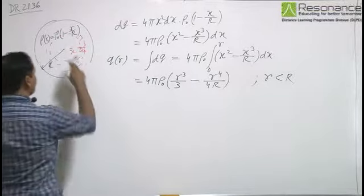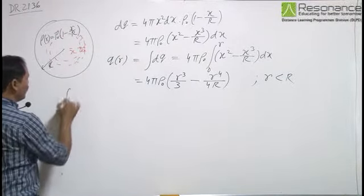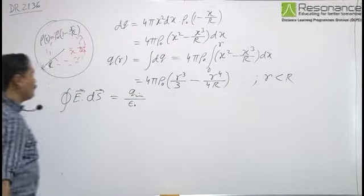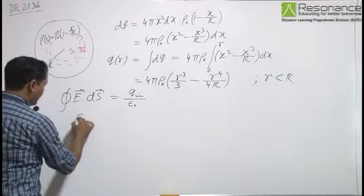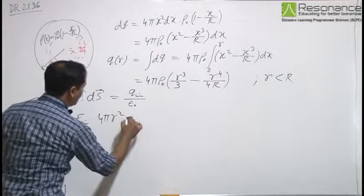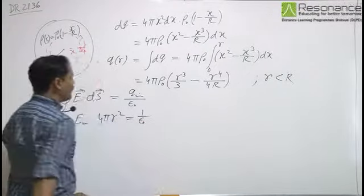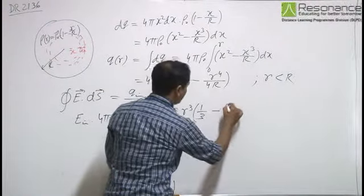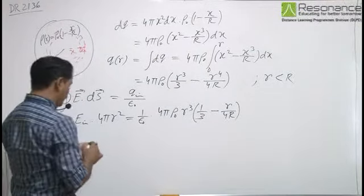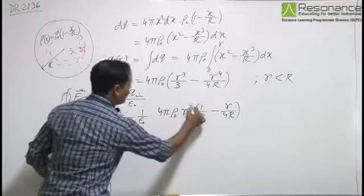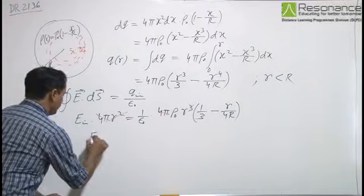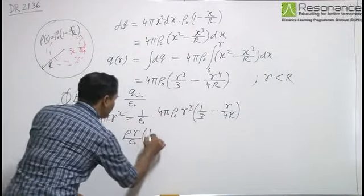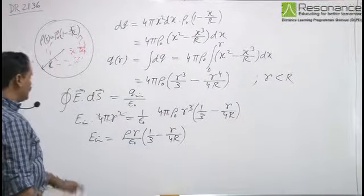For the situation when r < R, we find the electric field inside. Applying Gauss's law: ∮E·dS = Q_inside/ε₀. For a spherical surface of radius r, E_inside · 4πr² = (1/ε₀) · 4πρ₀(r³/3 - r⁴/4R). Cancelling 4πr², we obtain E_inside = ρ₀(r/3 - r²/4R)/ε₀. This is the electric field inside the ball.